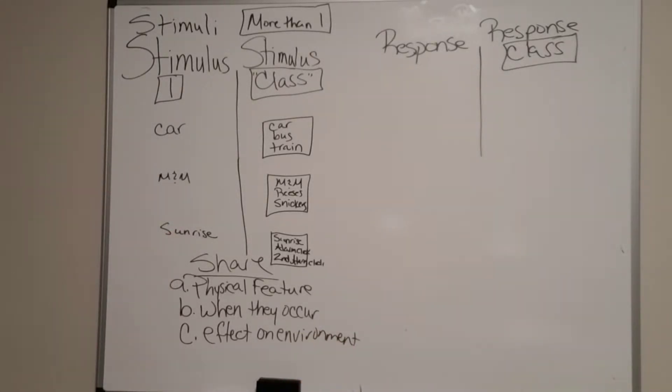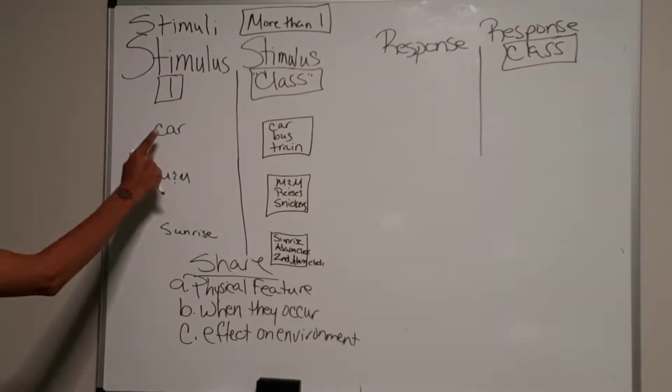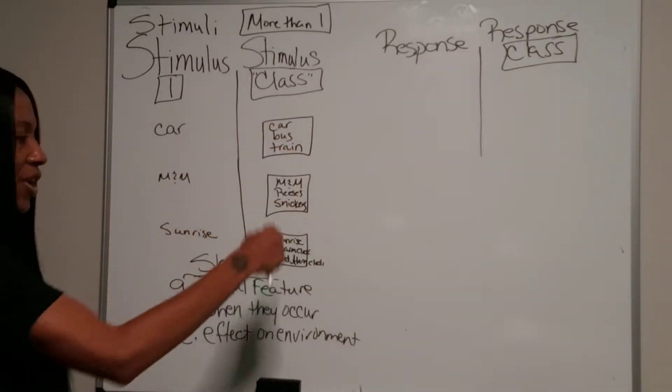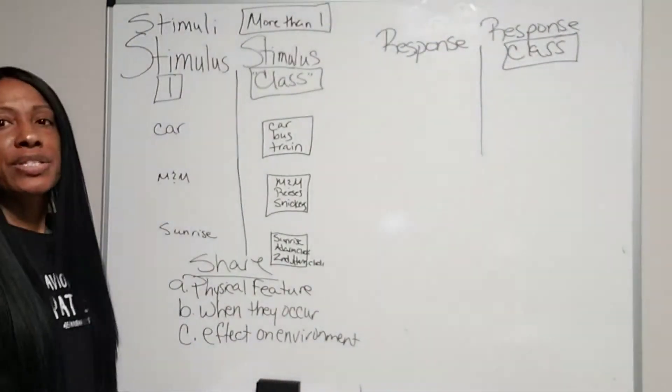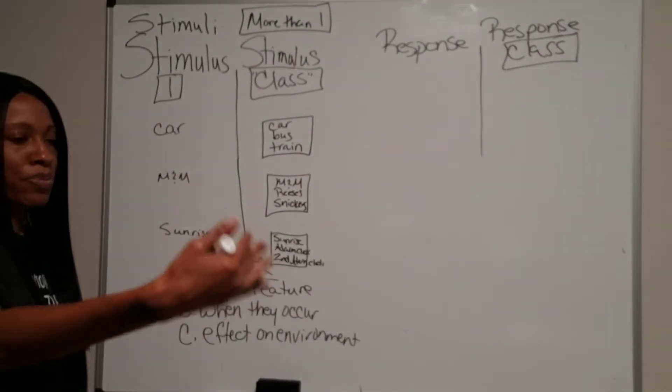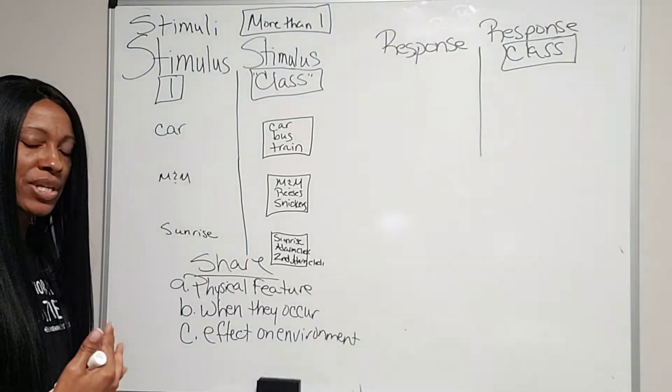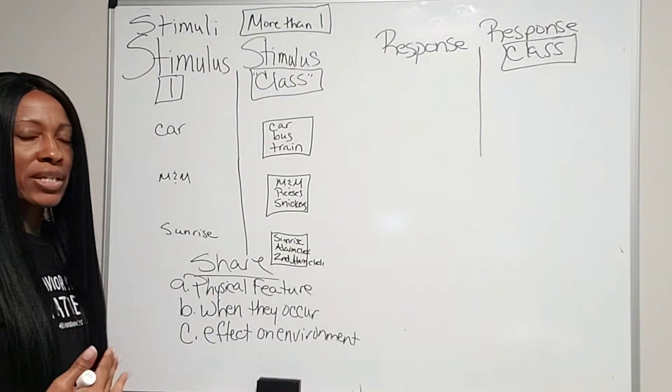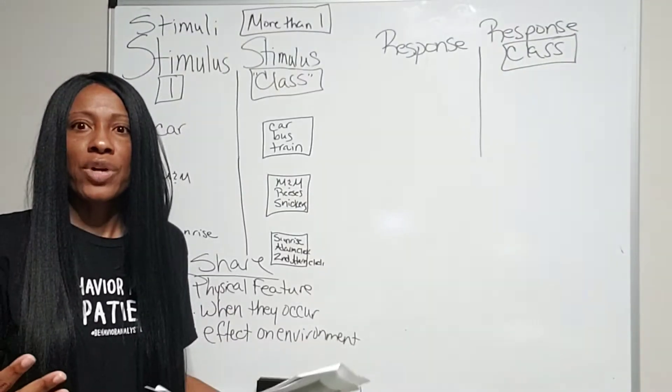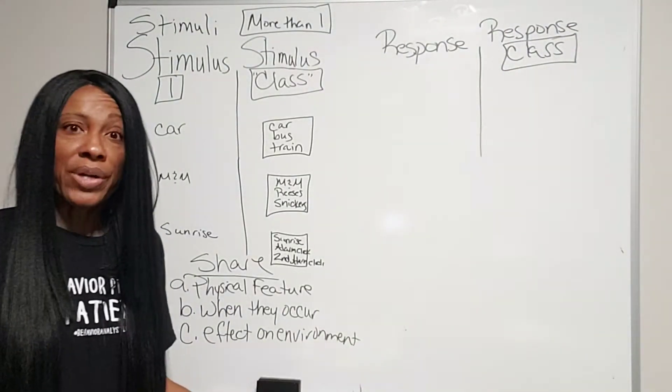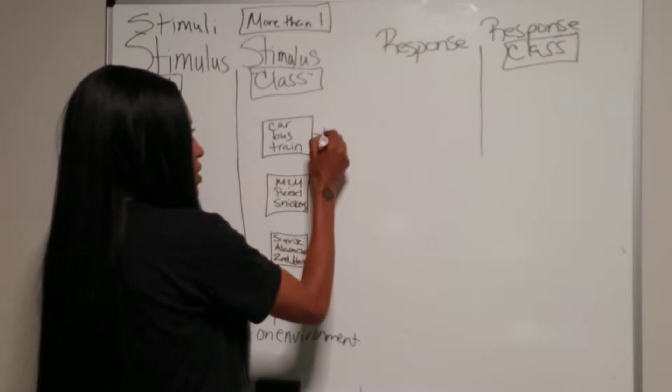So let's take a look at it. We know we have our one, but when we put it into car, bus, and train, what similarities do they have for you? When a car is presented, a bus is presented, or a train is presented, usually you're coming in contact with them when you're trying to get somewhere. So they all share that their transportation.